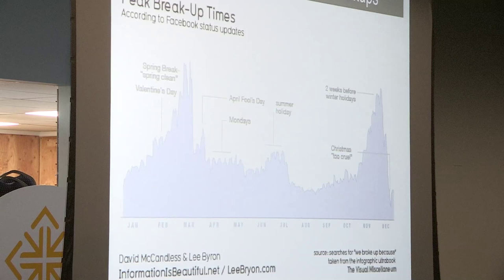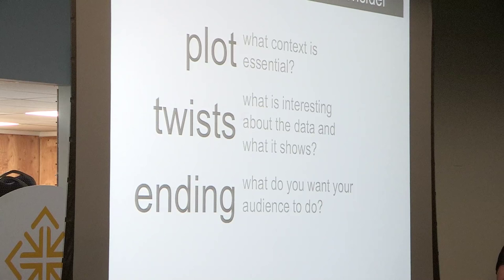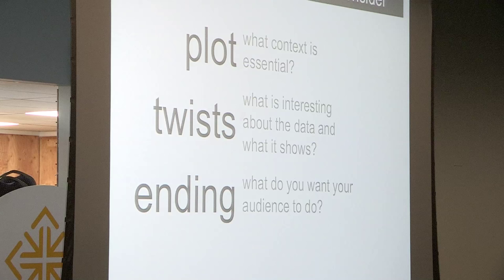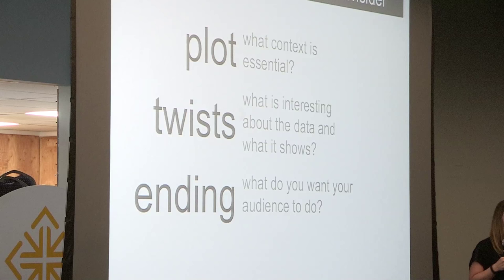When we think about the stories we want to tell with our data, we want to think back to Little Red Riding Hood — the plot, the twists, and the ending. The plot becomes: what context is essential for our audience to know so they're ready to take in the information? Then the twists: what's interesting about the data? By the way, if there isn't anything interesting about the data, don't show the data. It sounds obvious, but it happens a lot, and you run the risk of losing your audience's attention for when you do have something interesting to say. And then find your ending — the call to action. My bias is that we should always want our audience to do something.